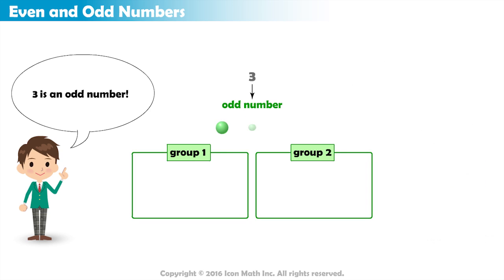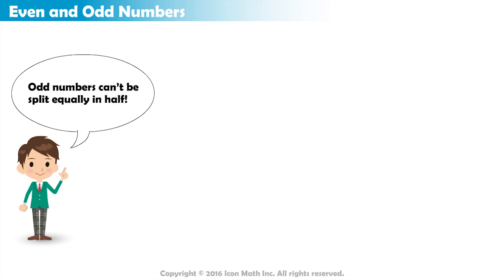Similarly, the number 3 is also odd. Because we can give one counter to both groups, but we will have one counter left that we can't evenly split among the two groups. The same happens for any odd number, where we will always end up with one counter left that we can't evenly split.